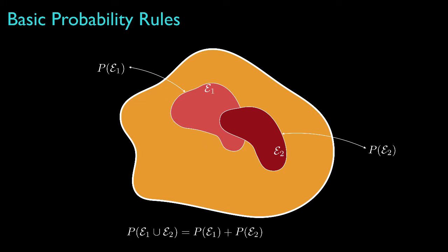As we do when they are disjoint events, we start by adding their individual probabilities. But by doing so, we need to note that we double count the event that is the intersection of the two events. Therefore, we need to subtract the probability of the intersection event so that it isn't double counted. So the probability of the union of these two events is the probability of each event summed, minus the probability of the intersection — the part that was double counted.